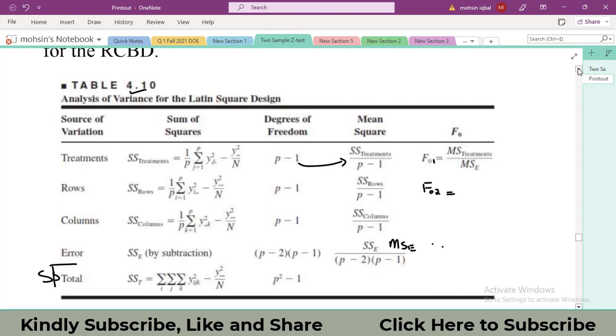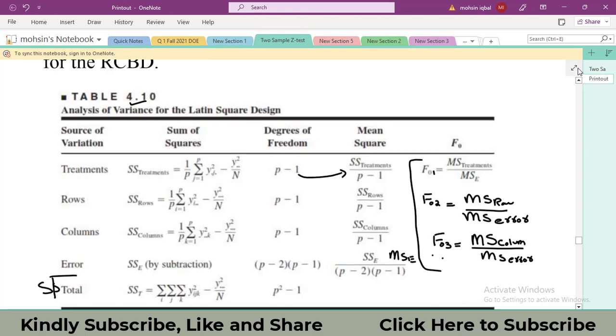You will calculate it by MS of rows divided by MS of error. If you want to calculate your F naught value for the third factor or second nuisance factor, divide MS of columns by MS of error. By comparing all these three F naught values with their respective tabulated values, you will get the information about which of my three factors is found to be a significant one.